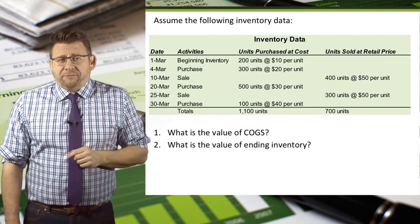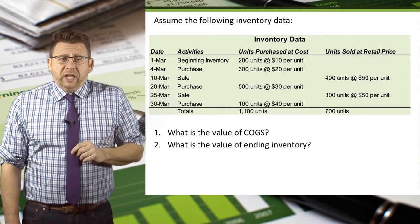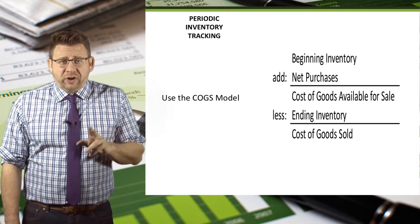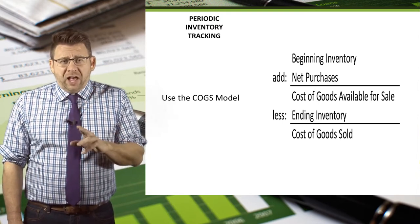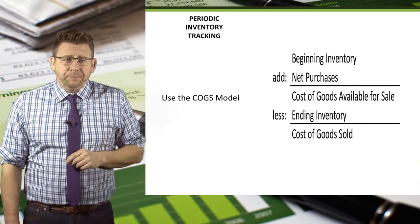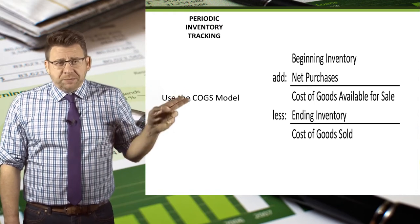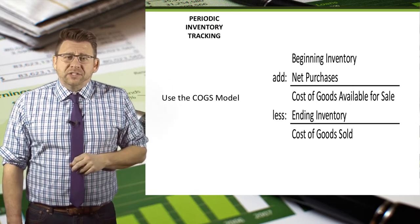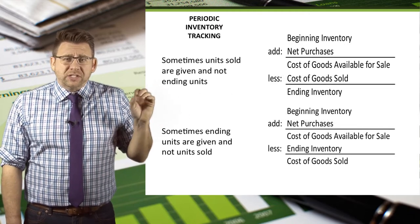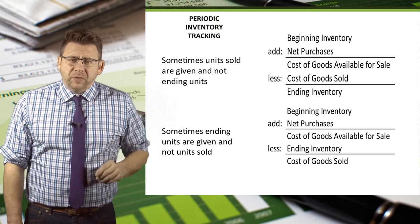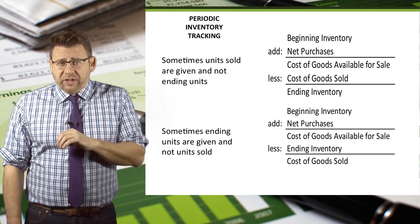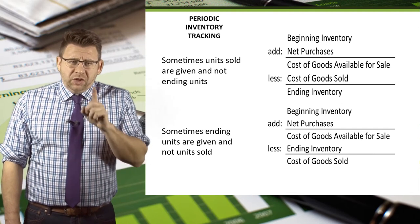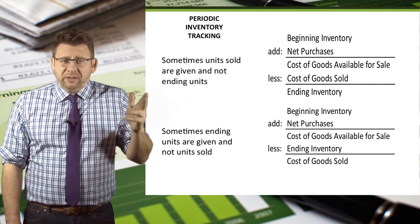Okay, with this data and using average cost, let's determine the value of ending inventory and the amount of cost of goods sold that should be recorded. Since inventory isn't accounted for after each transaction, we need to use the cost of goods sold model. The model is: beginning inventory plus purchases equals goods available for sale; from that we subtract ending inventory to arrive at cost of goods sold. We could also subtract the units sold to arrive at ending inventory. This is important because sometimes units sold are given and not ending units, while other times ending units are given and not units sold.